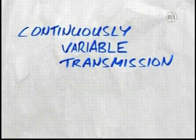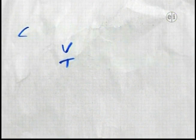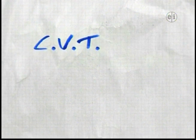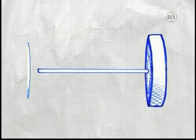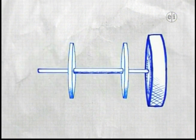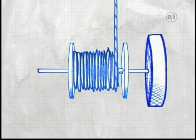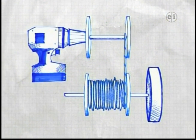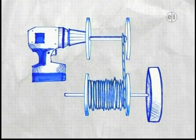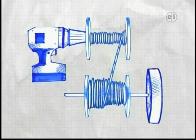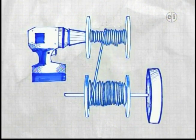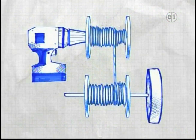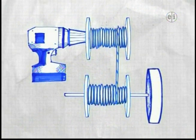A continuously variable transmission works like this. One spool wound with cable is attached to the wheel's axle, and a take-up spool is attached to the drill. With each turn of the drill, the take-up spool takes up more cable and grows in diameter, while the wheel spool that's feeding cable shrinks in diameter and must turn faster to keep up.